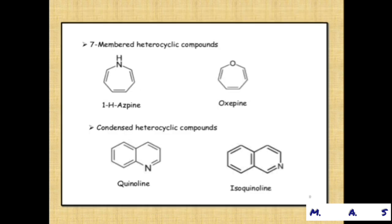Seven-membered heterocyclic compounds — examples are 1H-azepine and oxapine. In 1H-azepine, numbering starts from nitrogen; you can go clockwise or anti-clockwise around the 7-membered ring. In oxapine, oxygen is present and you can number clockwise or anti-clockwise.